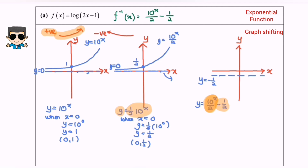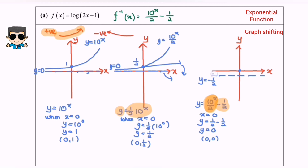To find the intercept, when x equals 0, y equals 1/2 minus 1/2, so y equals 0. The intersection point becomes the origin (0, 0) because everything has shifted downward. Our graph passes through the origin.